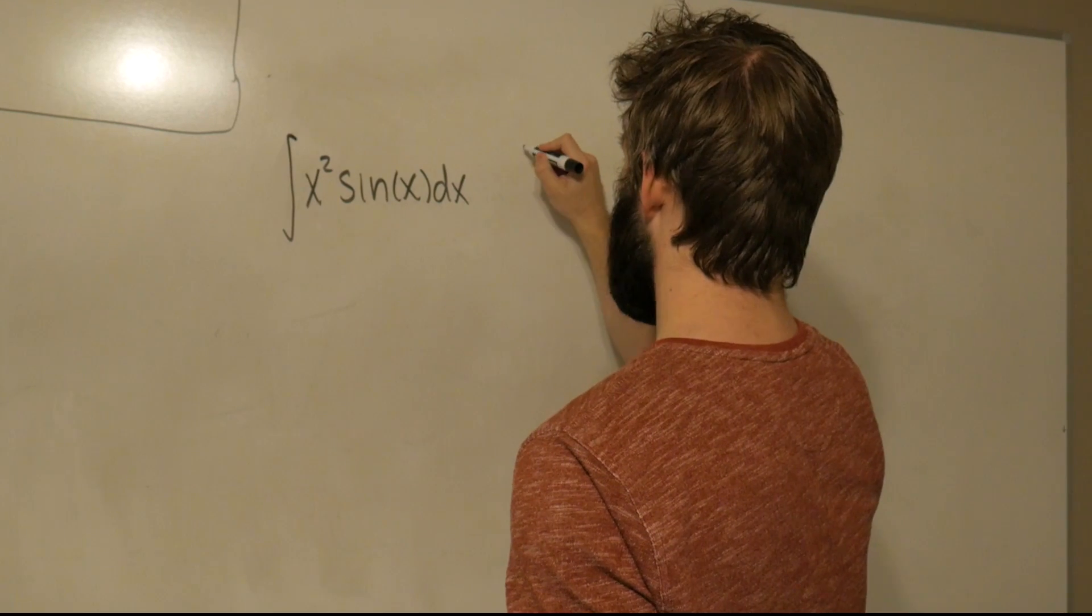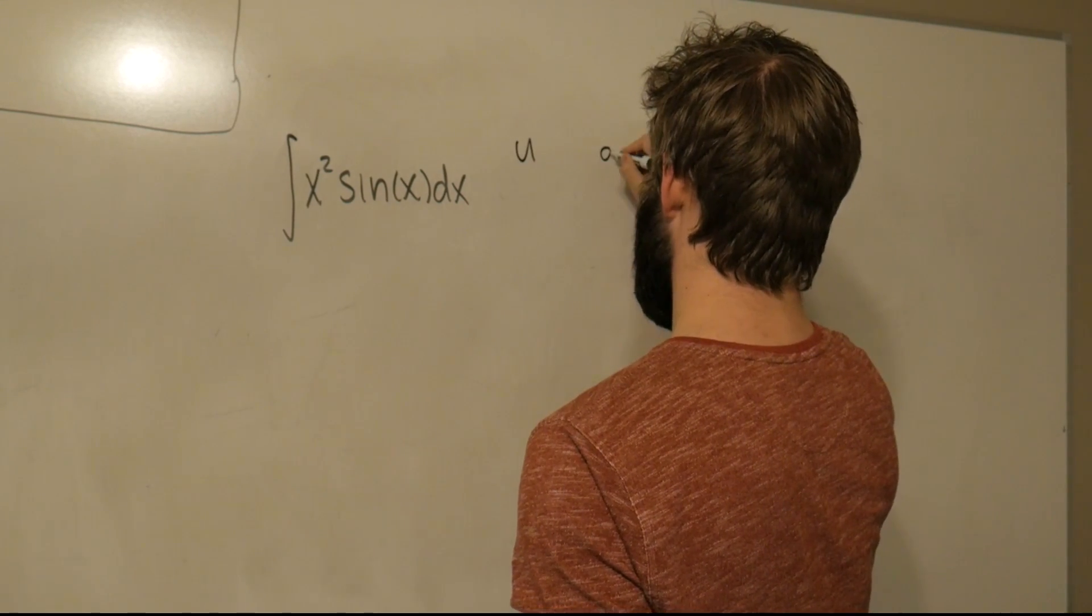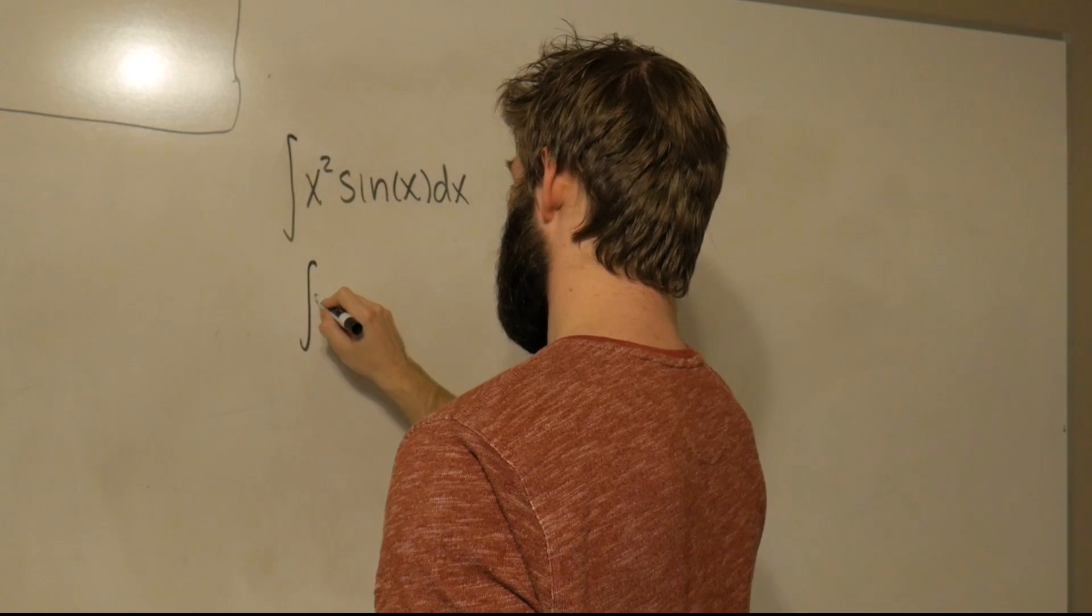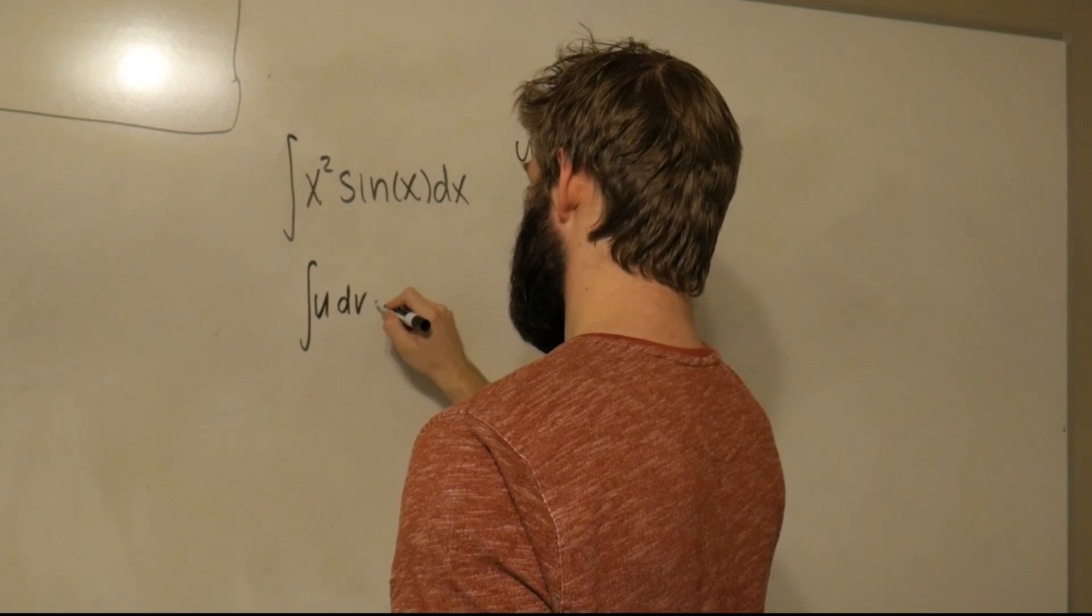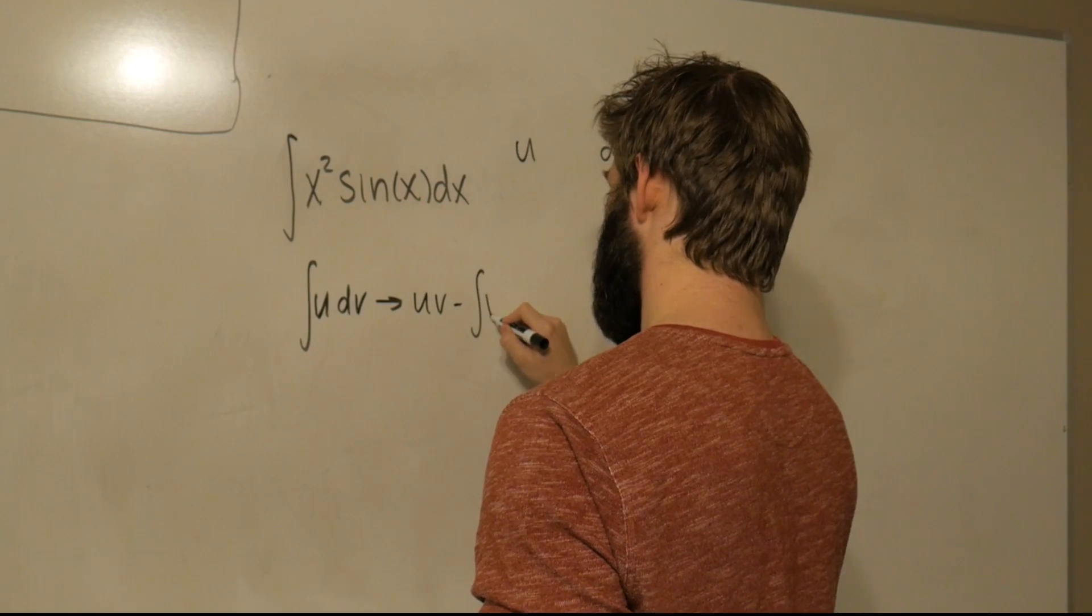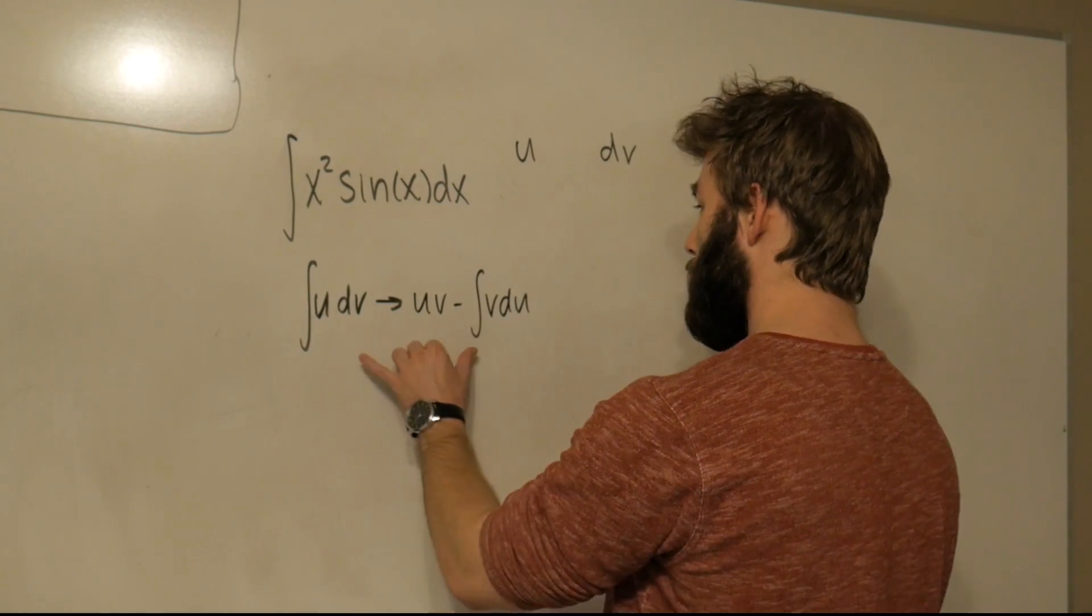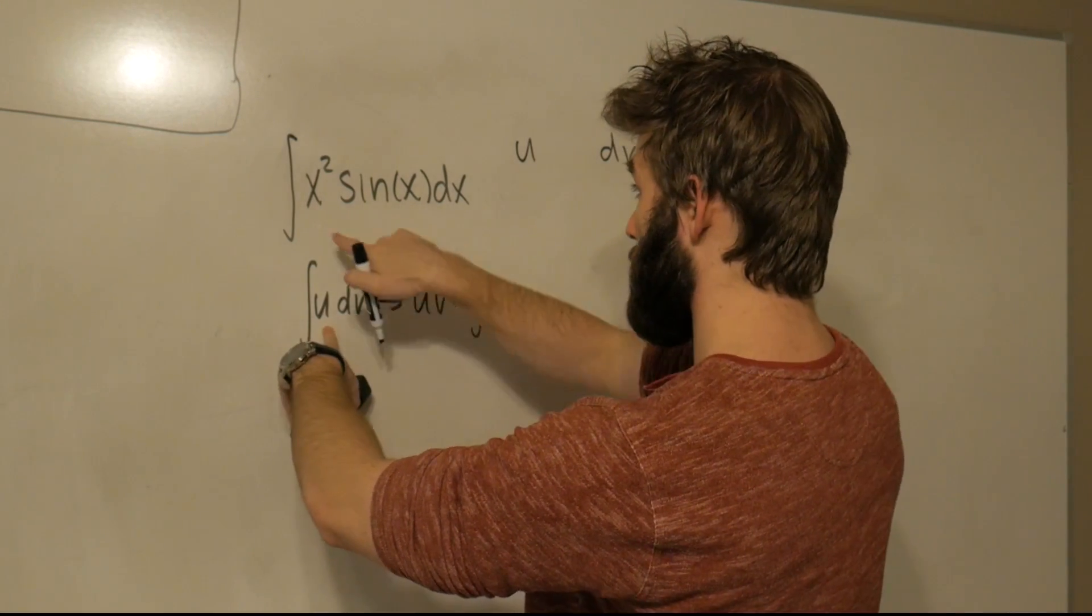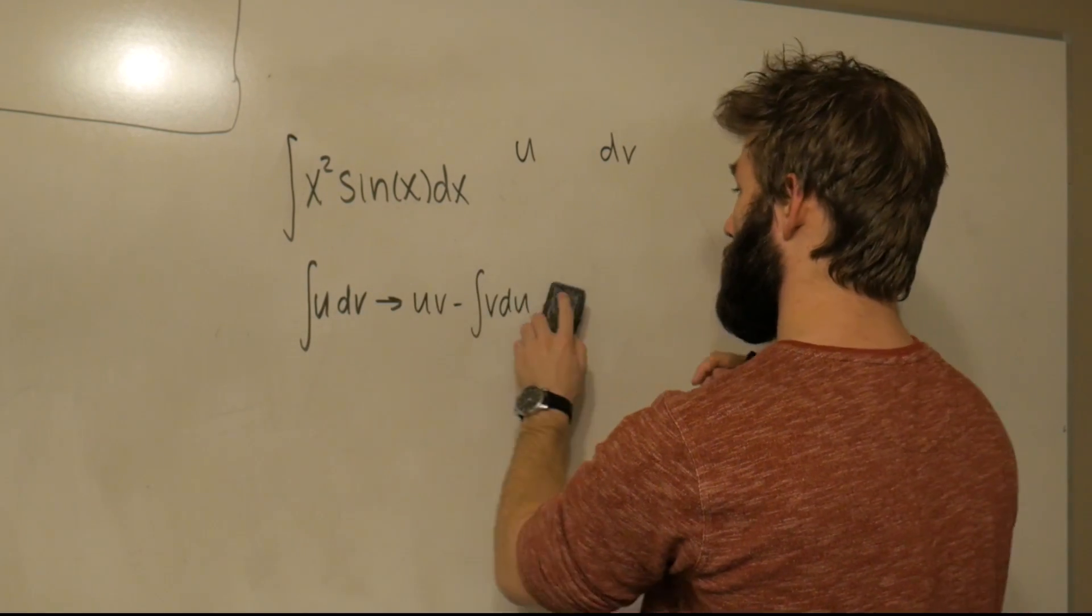So the first thing that we would do is define our u and our dv. For those of you who might not remember, if we can write an integral as ∫u dv, then that integral becomes uv - ∫v du. This is integration by parts. Cool. So we just have to define what our u is in this integral and what our dv will be.